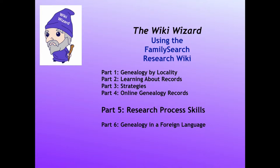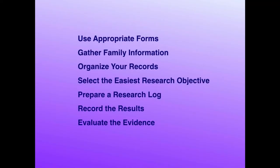This is the fifth video in a series designed to help you learn how to use the FamilySearch Research Wiki. Here are just some samples of the kinds of topics you'll find under the research process: using appropriate forms, how to gather information from your family homes and through interviews, organizing your records, how to select the easiest research objective, how to keep a research log, recording the results of what you find in records, how to label those carefully, and evaluating the evidence to make wise decisions about who your ancestors were.